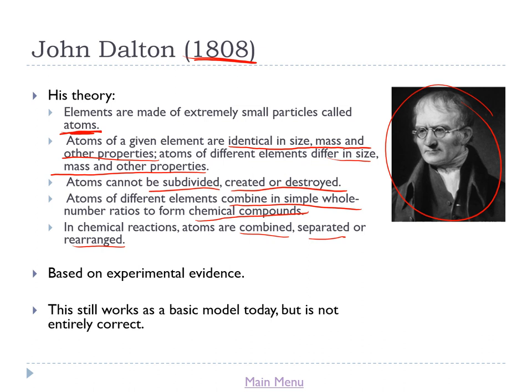Dalton's model pretty much works as a basic model today — it's often what we think of when picturing atoms. However, it isn't perfect. We now know that atoms of a given element are not always identical in mass because of isotopes; some isotopes are radioactive, others are not. We also know about subatomic particles, nuclear fission and fusion, meaning atoms can be subdivided and created or destroyed. Despite these issues, the theory works well, especially bearing in mind it was developed over 200 years ago.